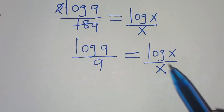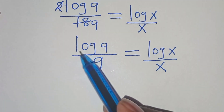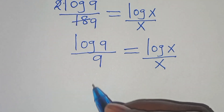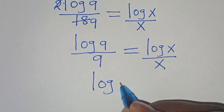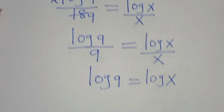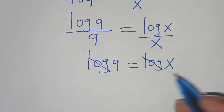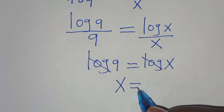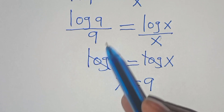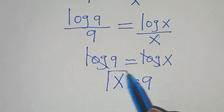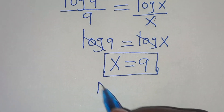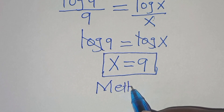Checking both sides, we have log x over x and log 9 over 9. This means log 9 over 9 equals log x over x, so dropping the logarithm, x is equal to 9. We conclude that by Method 1, x equals 9.